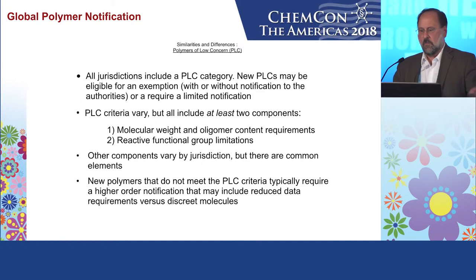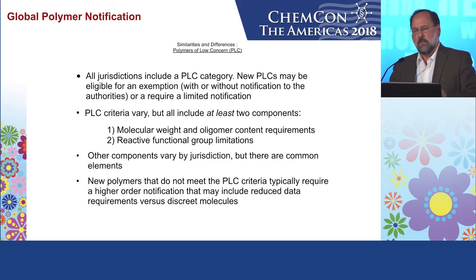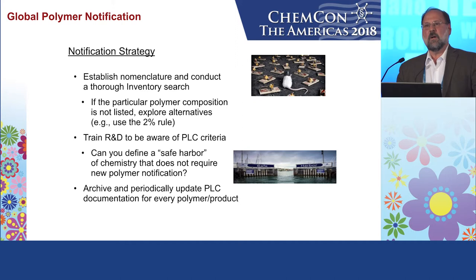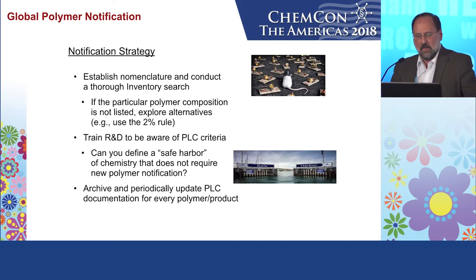If you're not polymer of low concern, the information requirements keep going up all the way to being treated like a chemical. So how do you do a notification strategy? First, establish nomenclature and conduct a thorough inventory search — make sure your polymer isn't already listed, use the exclusions and group listings that are available. If a particular polymer composition is not listed, explore alternatives. Train your R&D to be aware of PLC criteria — they probably don't know, but in a world where things cost more and more money, if you can take a low concern exemption, you should do it.